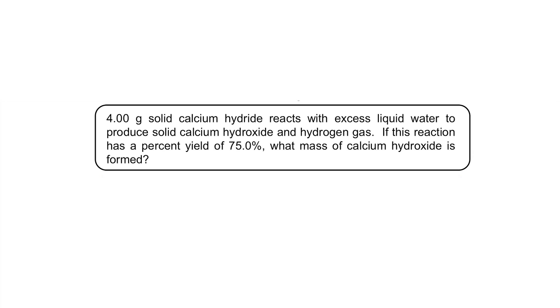Let's look at another example. Here's a reaction of calcium hydride that reacts with water to form calcium hydroxide and hydrogen gas. The percent yield in this particular case is 75%. Now what mass of the product calcium hydroxide do I get under these conditions?